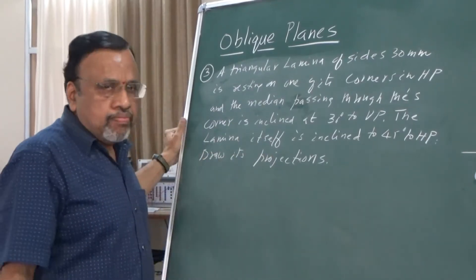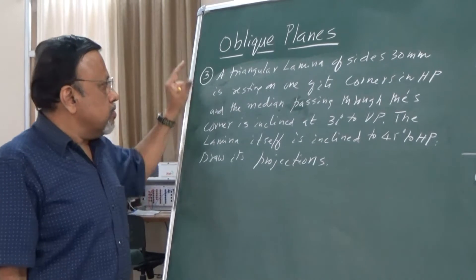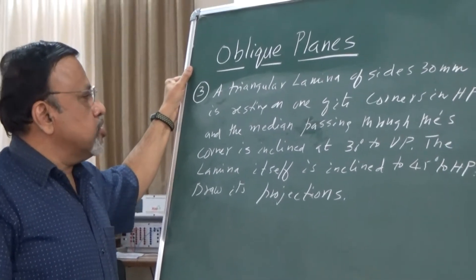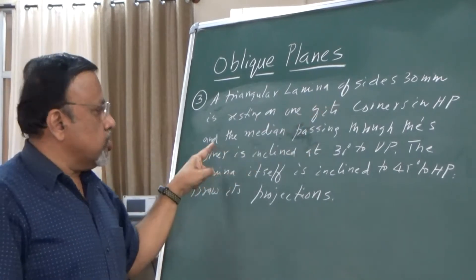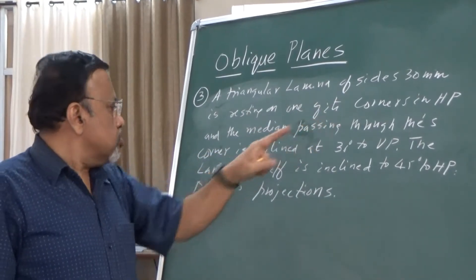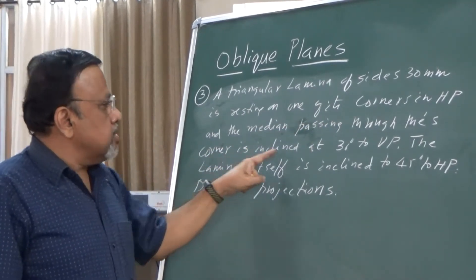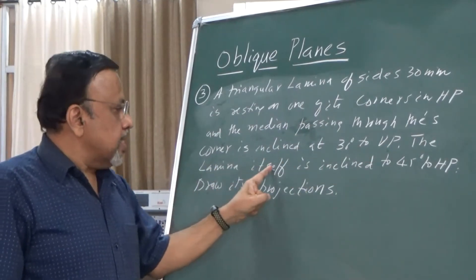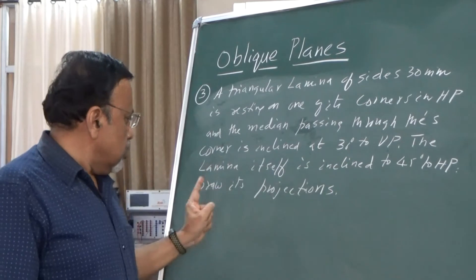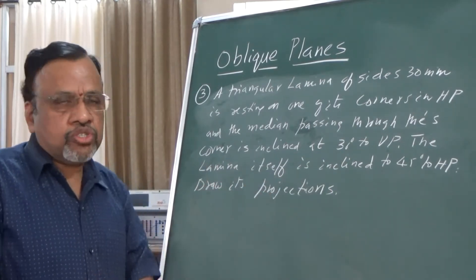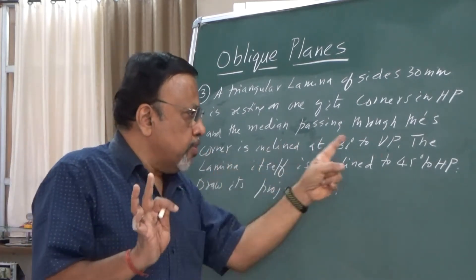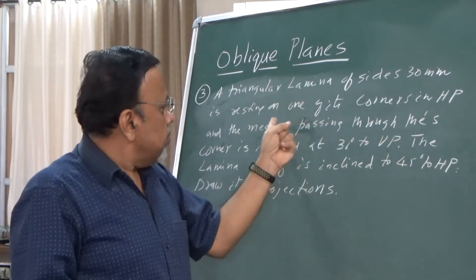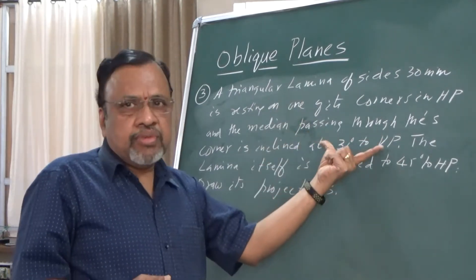Now let us go to the next problem. A triangular lamina of sides 30mm is resting on one of its corners in HP, and the median passing through that corner is inclined at 30 degrees to VP. The lamina itself is inclined at 40 degrees to HP. Draw its projections. Note that two inclinations are given: one is surface inclination and the other is median inclination.